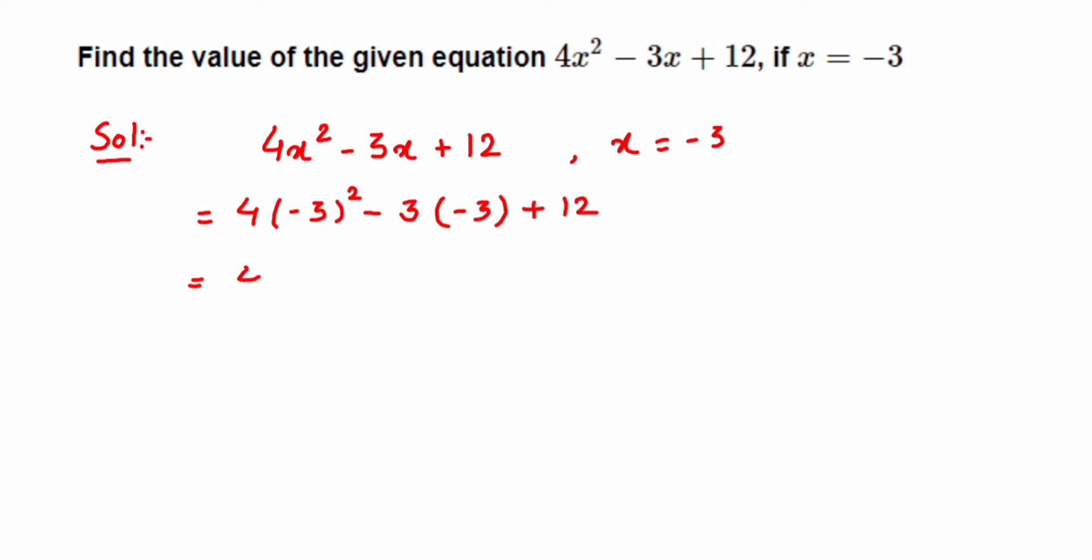Now I'm going to solve the bracket part first. So 4 into minus 3 squared is nothing but you're multiplying minus 3 two times, that is minus 3 into minus 3. So 3 times 3 is 9, and minus into minus is plus, so we'll get plus 9 or you can simply write 9.